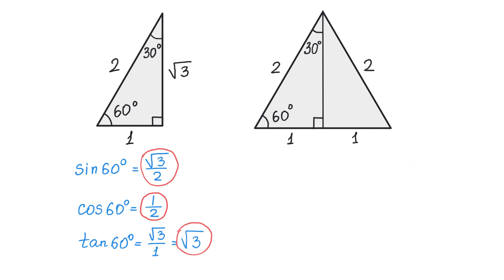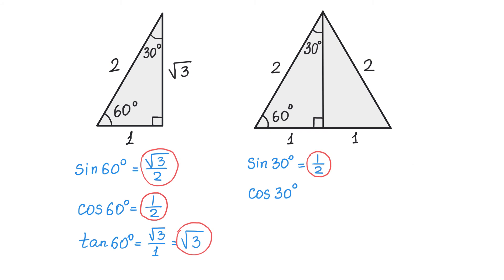Here we have the values of sine, cosine, and tangent of 60 degrees. Now let's find the values of sine, cosine, and tangent of 30 degrees. We will start with sine of 30 degrees. In this triangle, we have the 30 degree angle. Because sine is opposite over hypotenuse, this is the opposite side and this is the hypotenuse. Then sine of 30 degrees will be 1 over 2. Now let's find cosine of 30 degrees. Cosine is adjacent divided by hypotenuse. For this angle, this is the adjacent side and this is the hypotenuse. Then cosine of 30 degrees is square root of 3 over 2.